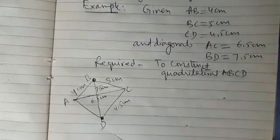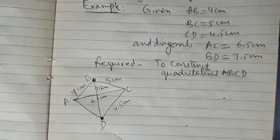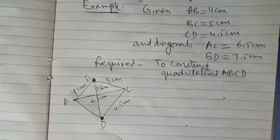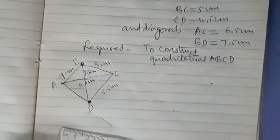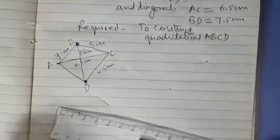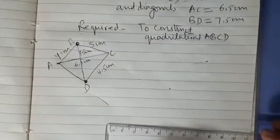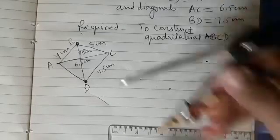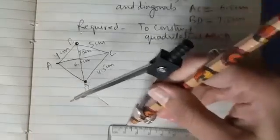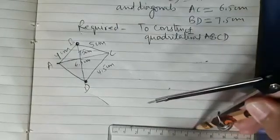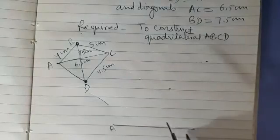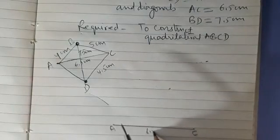So let us begin the construction. Step 1 is we are going to draw AC which is 6.5 cm. So let us start this. So using the ruler we will be drawing a line segment AC and this is 6.5 cm.